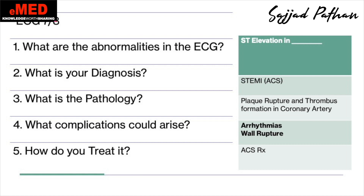When you get a patient with an inferior MI, do not forget to take the posterior lead ECGs — V7, V8, and V9 — and right-sided ECG leads. The diagnosis is STEMI. The pathology is plaque rupture and thrombus formation in the coronary artery. Complications include arrhythmias, wall rupture, sudden cardiac death, and pericarditis — acutely as well as chronically after ten days, which is Dressler's syndrome. Treatment: dual antiplatelets and get them to the cath lab.